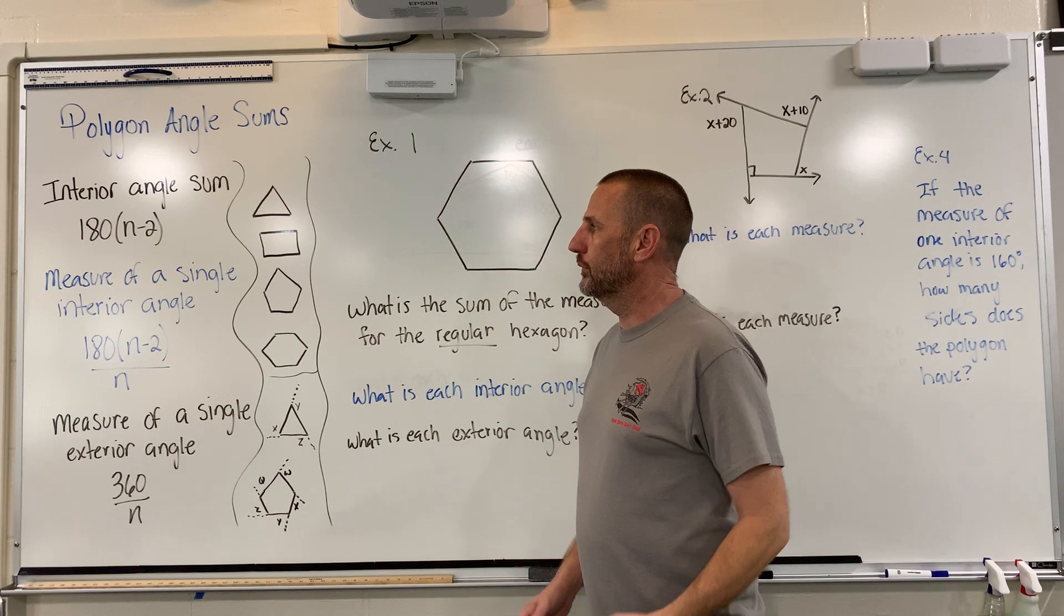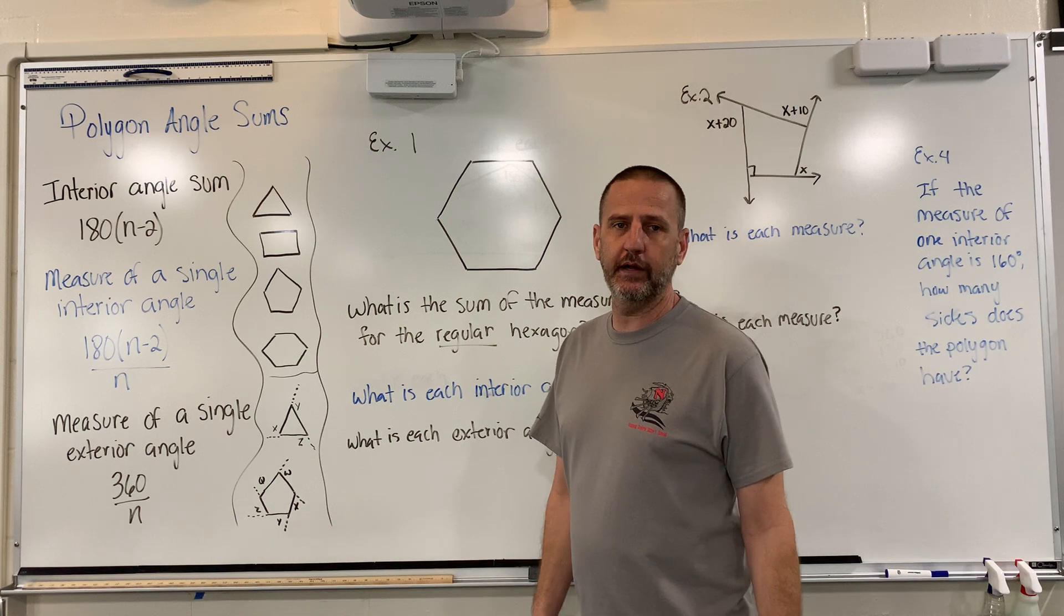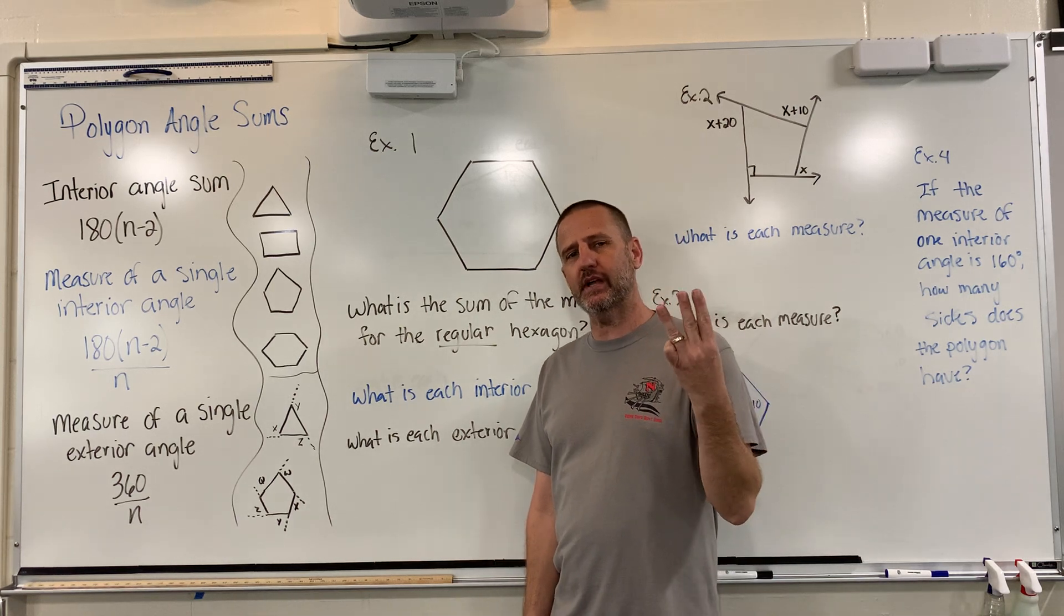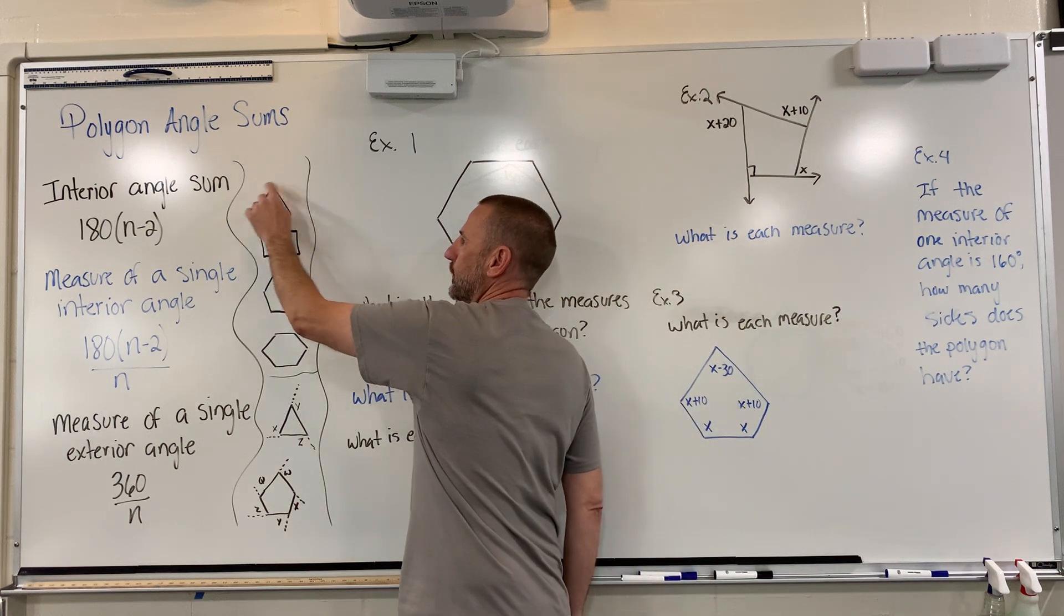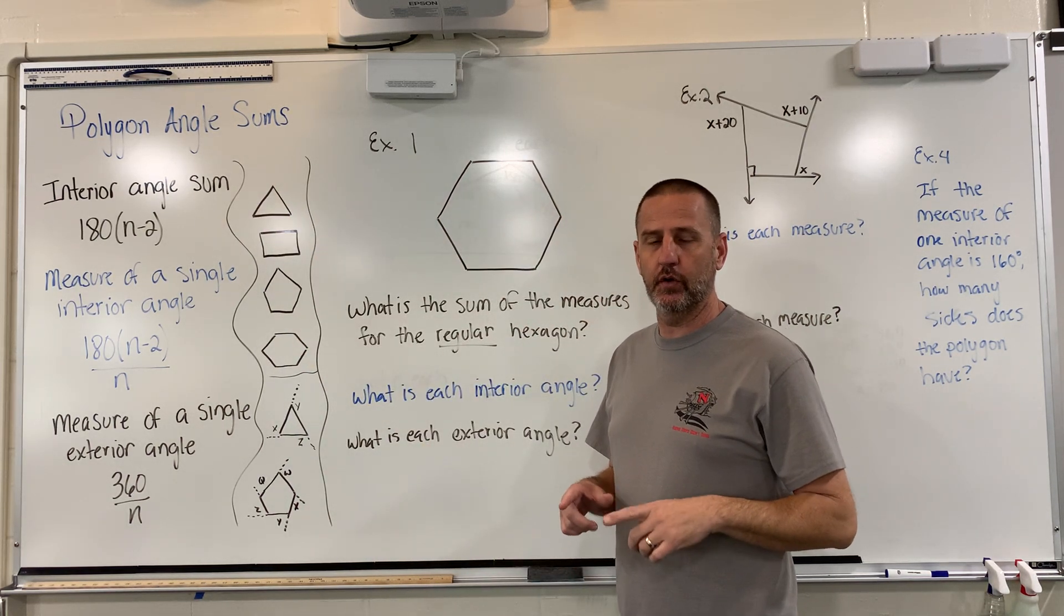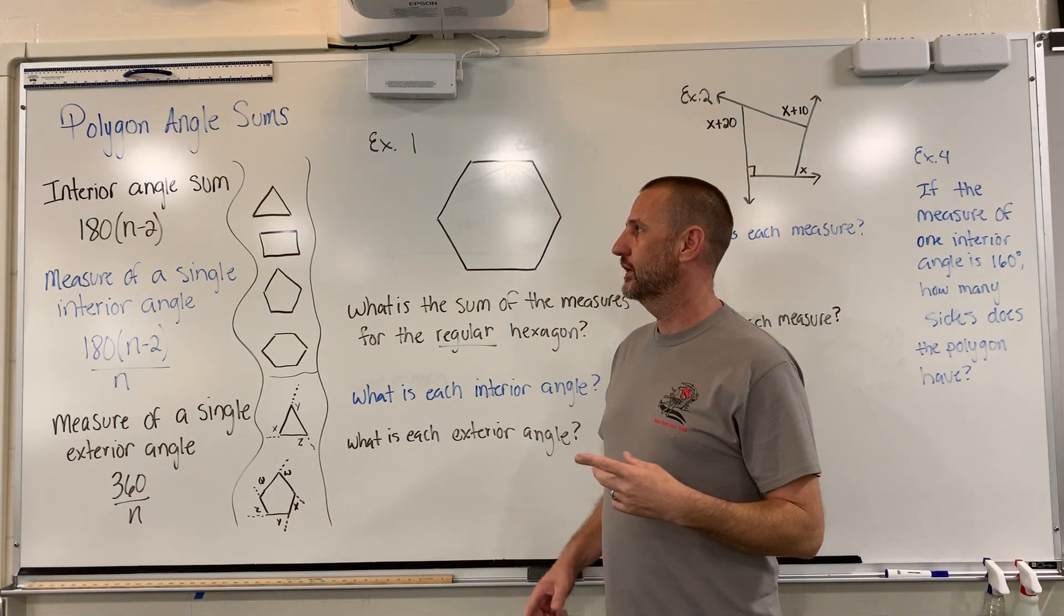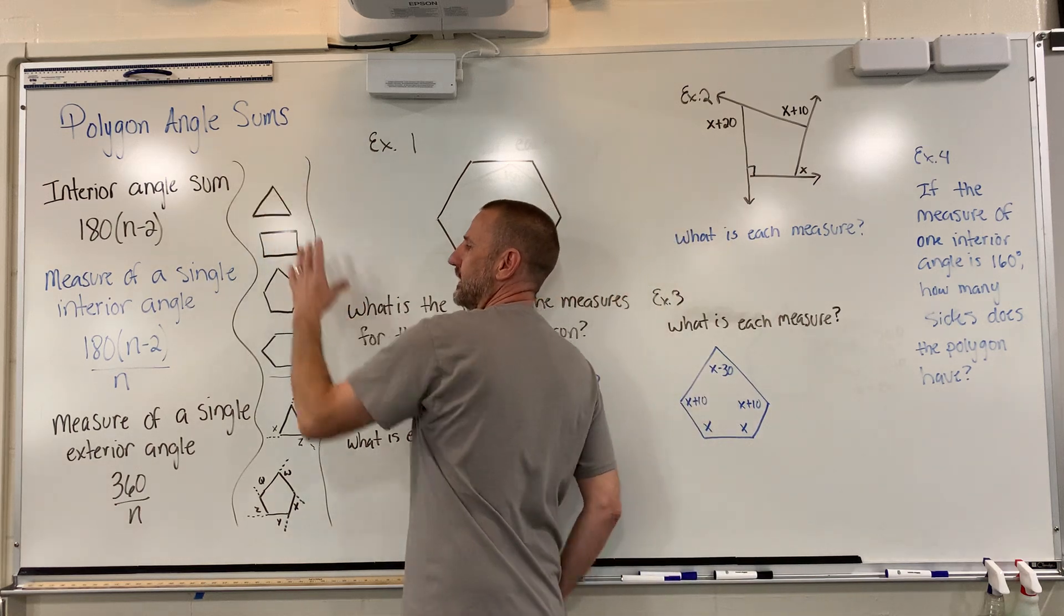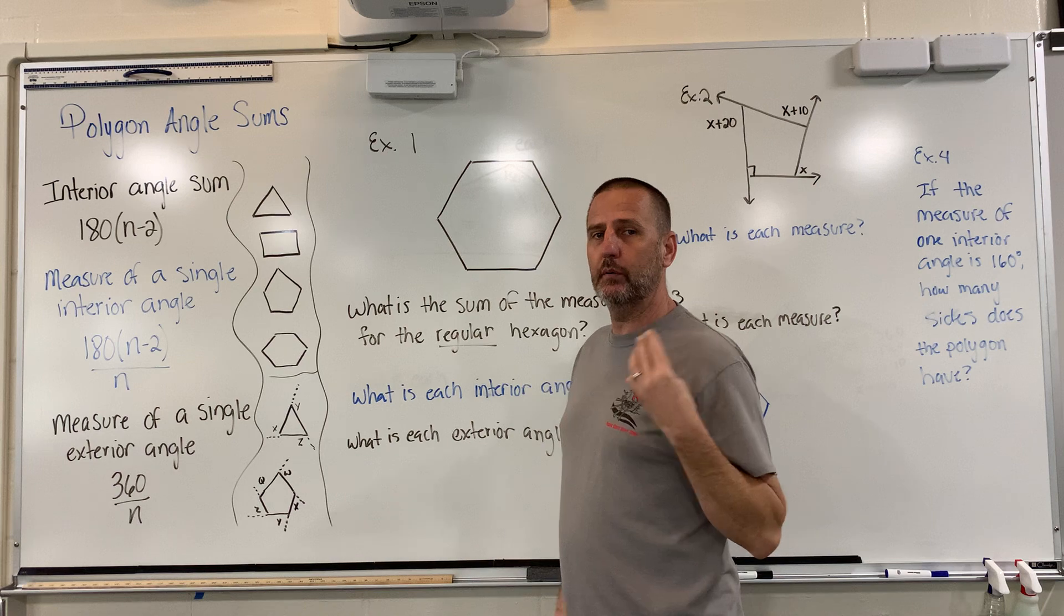So the first shape that we have that has what you call an interior is going to be a triangle. Because you need three sides, a bare minimum of three sides. When you connect three sides, you actually establish what's called an interior. With only two sides, you never actually have an interior because you don't have a third side to capture and make an actual interior. So three is where we begin.